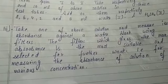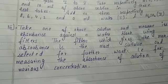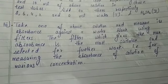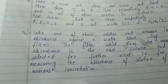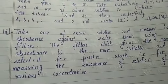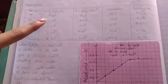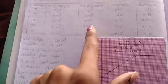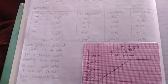Then take one of our solution and measure its absorbance against a water blank using filters. The filter which gives the maximum absorbance is the most suitable and selected for further work, that is for measuring the absorbance of solutions of various concentrations. This is the observation table.